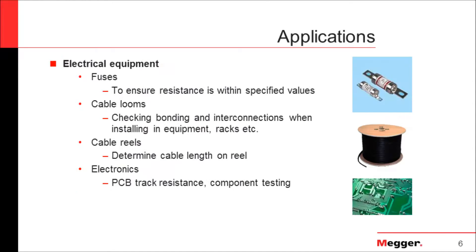Take a pretty easy example: if we have a reel of insulated copper wire, it may have a tag indicating the wire gauge and the resistance per unit of length. Or if the tag has been removed, we can just cut a small piece of cable, measure its resistance, and then when we measure the whole coil, we have a factor to calculate the total length of the wire on that drum.